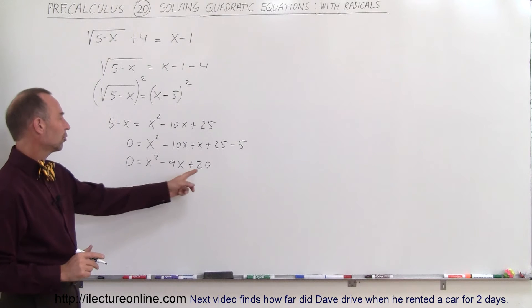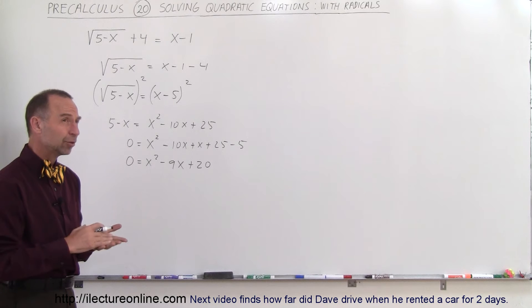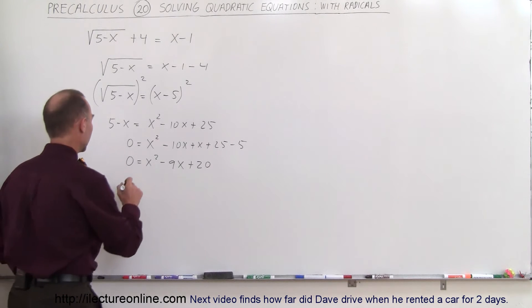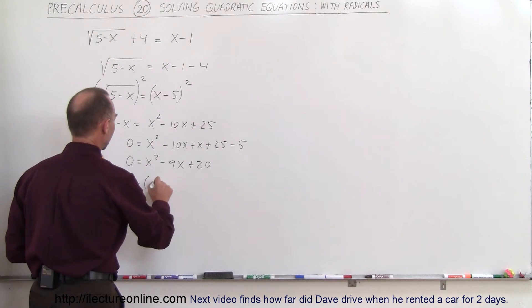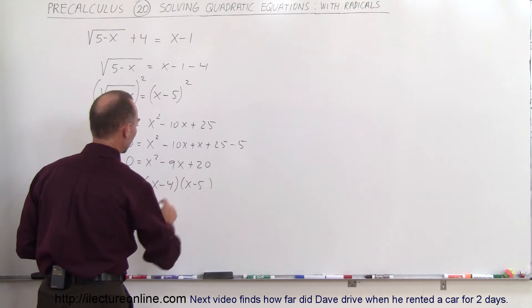We're looking for two numbers when you multiply you get positive 20, and when you add them you get minus 9. It looks like minus 4 and minus 5 might do the trick. So 0 equals x minus 4 times x minus 5, and that works.